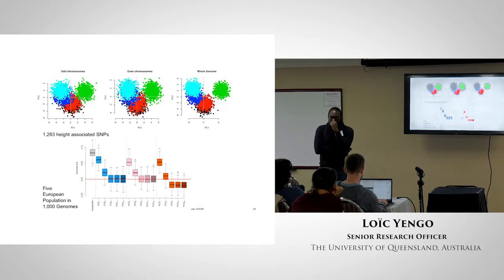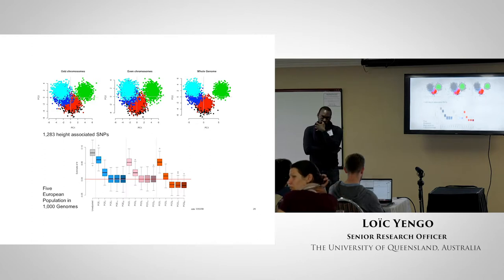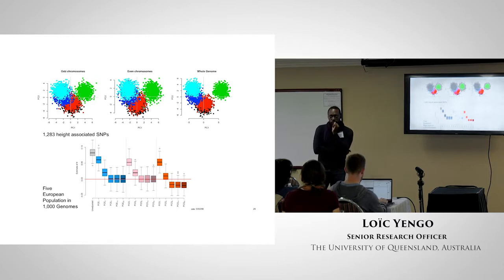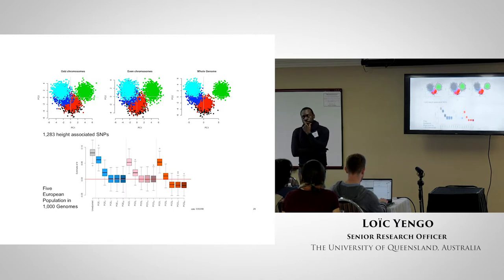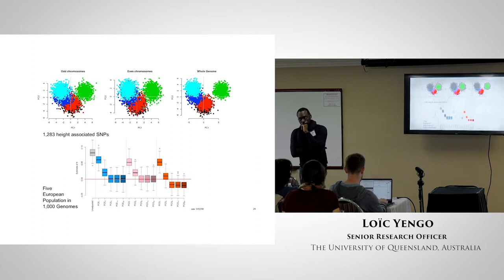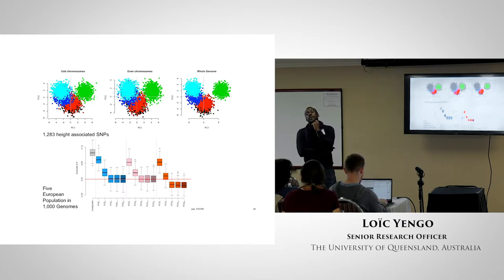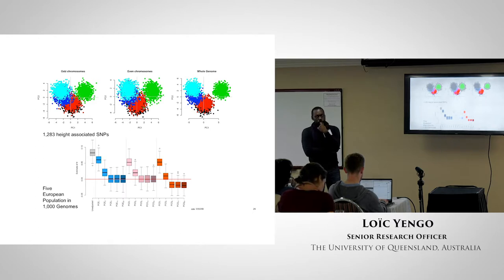I don't understand why using overlapping samples biases things. It's clear that it does because you can do it both ways and it biases things terribly, but mathematically I don't understand why — it's not like the usual case where you can easily work out the algebra of why it biases things with an overlapping sample.